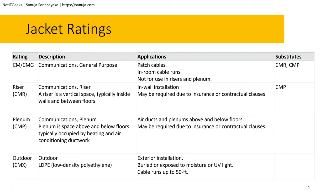Now let's discuss jacket ratings. The jacket is the outer covering of the cable, and there are different ratings: CM, CMG, CMR, CMP, and CMX. Some people also use the terms riser, plenum, and outdoor because of the use case scenarios.